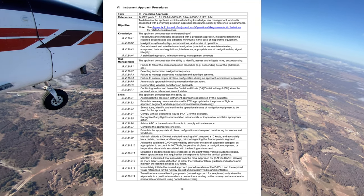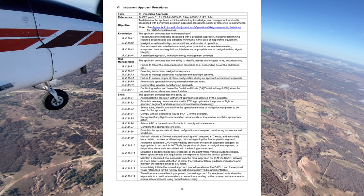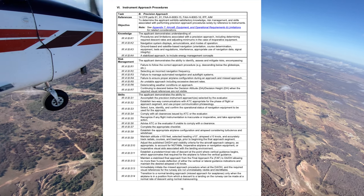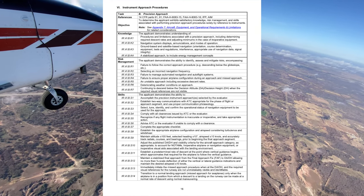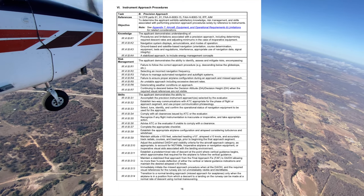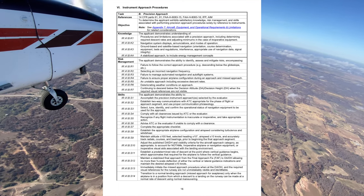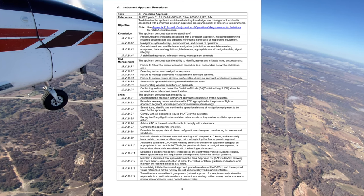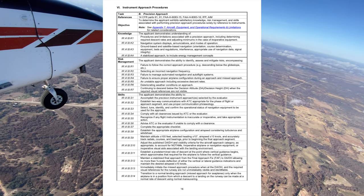Let's talk about the ILS — the Instrument Landing System. The ILS is a precision approach with vertical and lateral guidance that descends you down to minimums. The components of an ILS can be remembered with GLAM: glide slope, localizer, approach lighting system, and marker beacons.